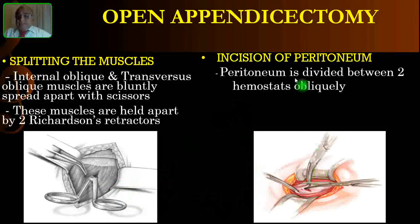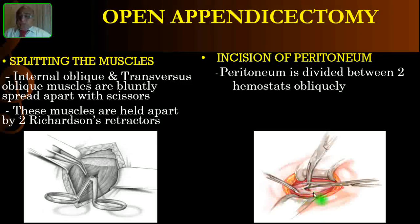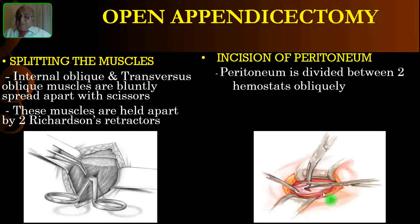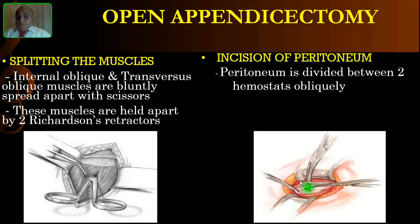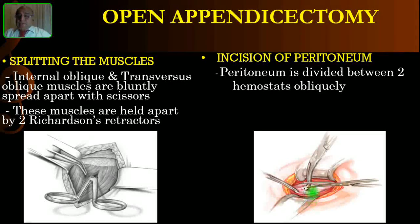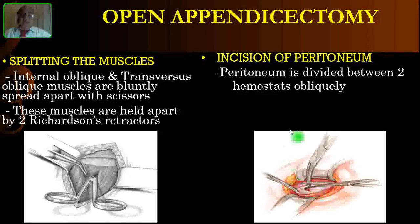After splitting the muscles, you will see the underlying peritoneum. Catch hold of the peritoneum with two hemostats one by one, then cut it open. Before cutting, pinch the area and make sure you are not catching the underlying bowel or omentum. Then cut it with a knife obliquely. Immediately after opening the peritoneum, you may see turbid fluid come out. Whatever the discharge — frank pus or otherwise — take a swab and send it for culture and sensitivity.